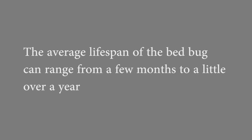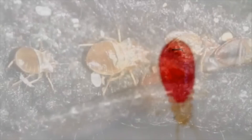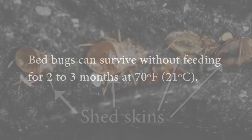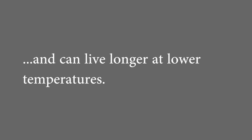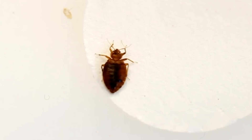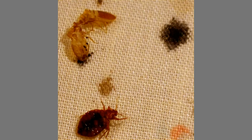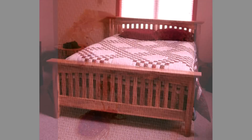A female bedbug can lay up to 200 eggs depending on temperature and the amount of food available. As they grow, bedbugs need to consume at least one blood meal before each molt and will shed their skins five times before turning into adults. Bedbugs feed only on blood but can readily survive without feeding for two to three months at 70 degrees Fahrenheit. However, bedbugs may live much longer at lower temperatures. Bedbugs excrete liquid fecal materials soon after feeding, which range from white to yellow, reddish brown, or dark brown to black in color — telltale signs of bedbug infestations.